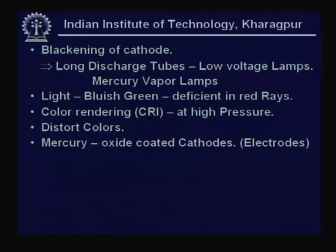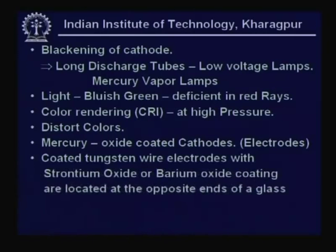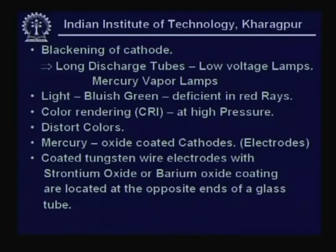In a mercury vapor lamp, oxide-coated cathodes are used. To avoid blackening, avoid long discharge tube lengths, and operate at low voltages, thermionic emission is employed. The two processes are cold cathode and hot cathode; hot cathode thermionic emission is preferred. We have tungsten wire filaments based on electrodes made of strontium or barium oxide located at opposite ends of a glass tube. The supply is alternating, so the two electrodes alternate as cathode and anode — thermionic emission requires heating of the cathode.